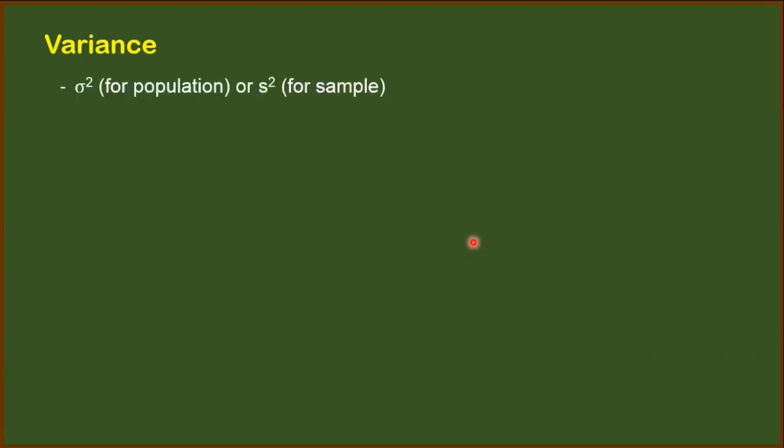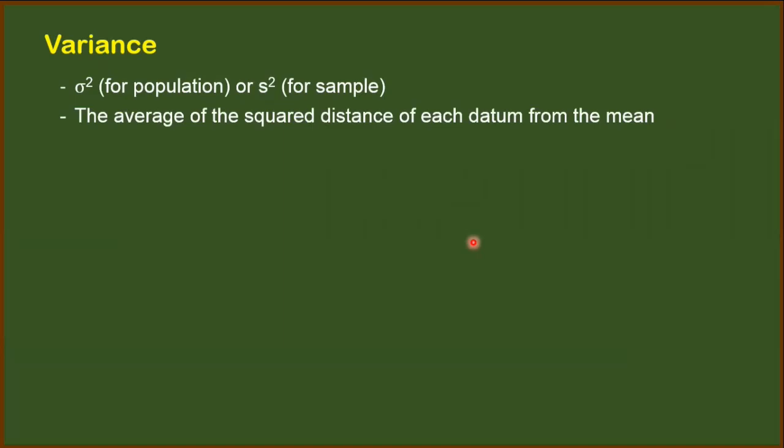Previously, we have defined the different measures of variation, and two of them will be discussed in this video. First, we have the variance. It is symbolized by small letter sigma squared for population, and small letter s squared for sample. It is the average of the squared distances of each datum from the mean. It is also considered as a parametric measure because it involves the mean.